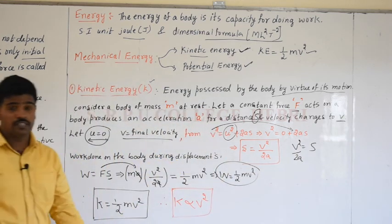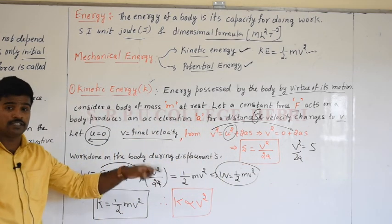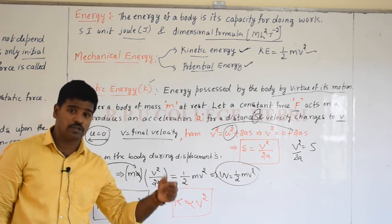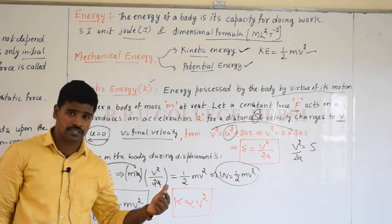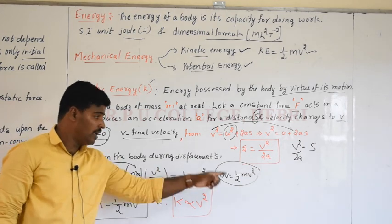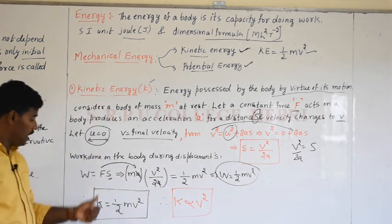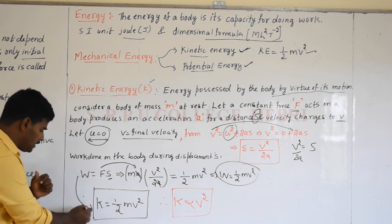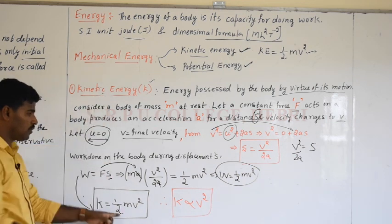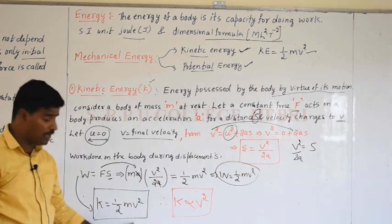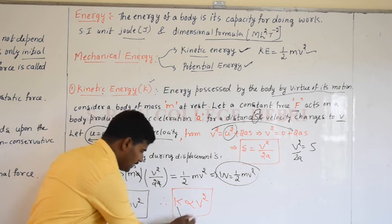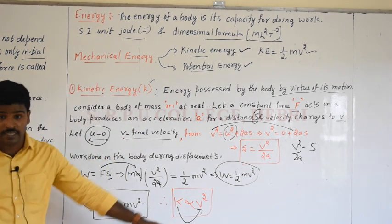This work done is nothing but kinetic energy, since kinetic energy of the body is produced by the work done by a force. Therefore K = ½mv² is the expression for kinetic energy. Since mass is constant, kinetic energy is directly proportional to v².